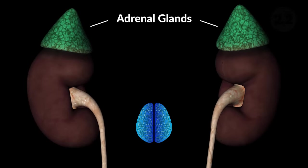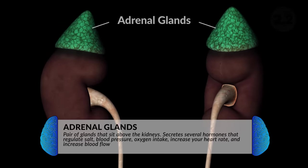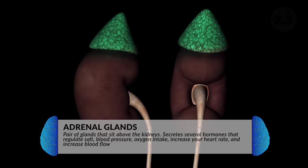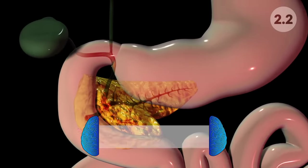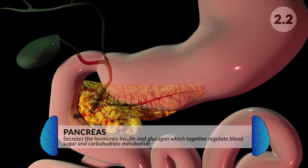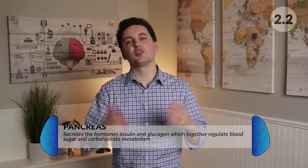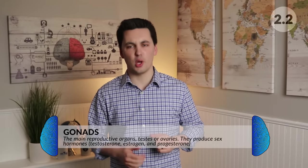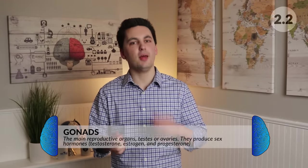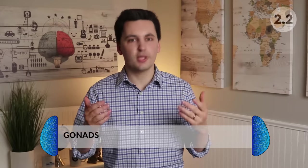Just above the kidney sits the adrenal glands, which help regulate salt levels, blood pressure, and oxygen intake. Hormones produced here are norepinephrine, epinephrine, and aldosterone. Near the stomach we have the pancreas, which produces insulin and glucagon to help regulate an individual's sugar levels. Lastly, we have the gonads — the ovaries or testes — where testosterone, estrogen, and progesterone are produced, allowing individuals to reproduce.